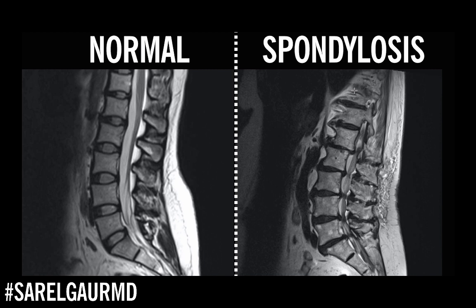Now let's look at the spine with spondylosis. The first thing I notice is that the discs are all abnormal. The normal discs have this white signal indicating fluid — these discs don't have that signal, meaning they are dried out. We call that disc desiccation. Because these discs are dried out, they're now starting to bulge posteriorly, poking out and affecting the spinal canal or central canal containing the cauda equina. Also, looking at the end plates of the bone near the vertebral discs, there are signal changes indicating abnormal stresses on the bone due to disc disease.